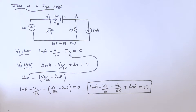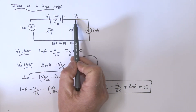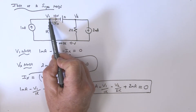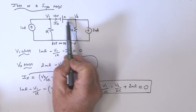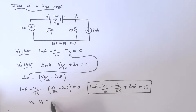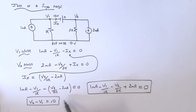What do we do now? Well, V2 minus V1 would be that voltage across the source, which is 10 volts. So we can write that V2 minus V1 equals 10. Now we have two equations with two unknowns and we can solve for those unknowns.